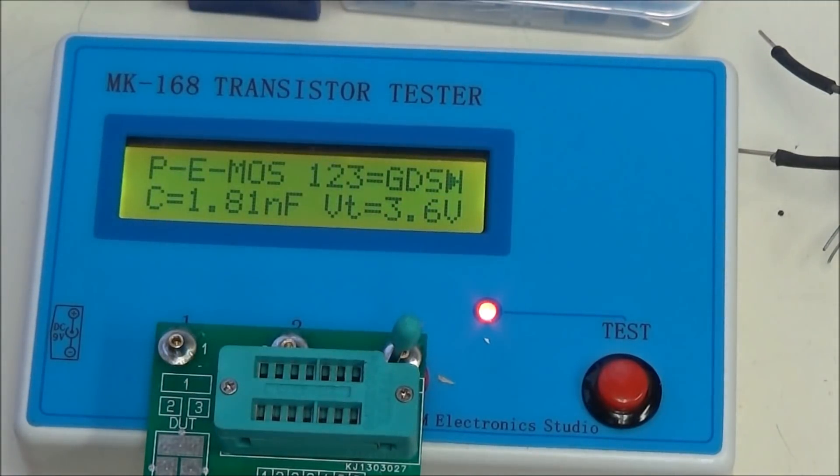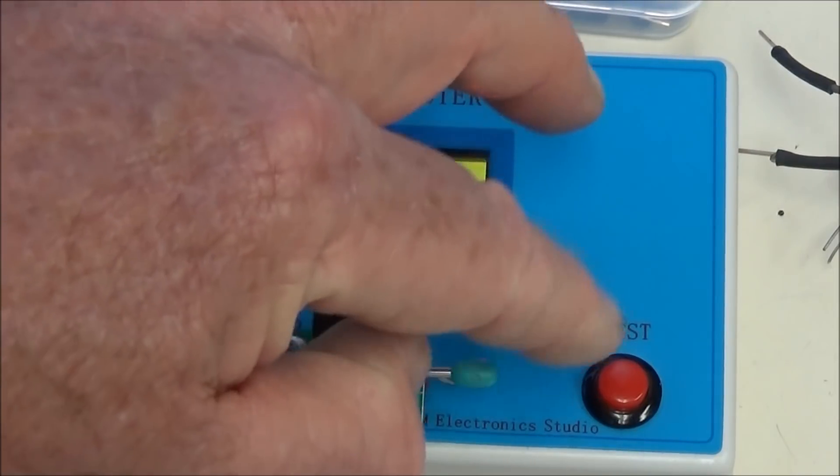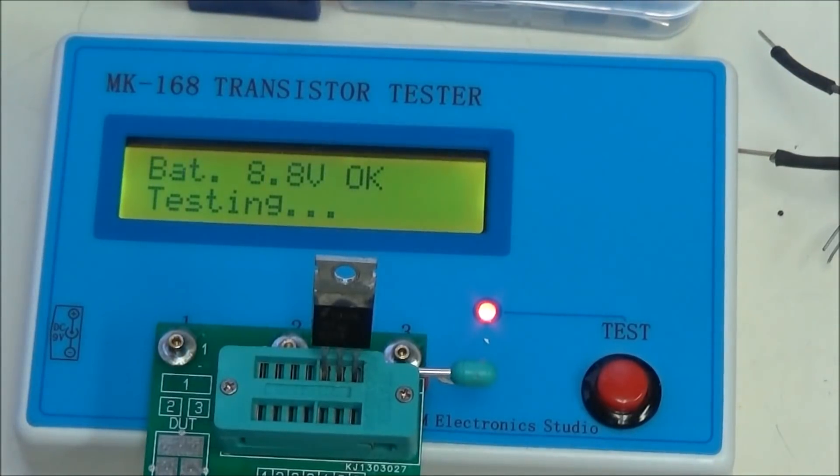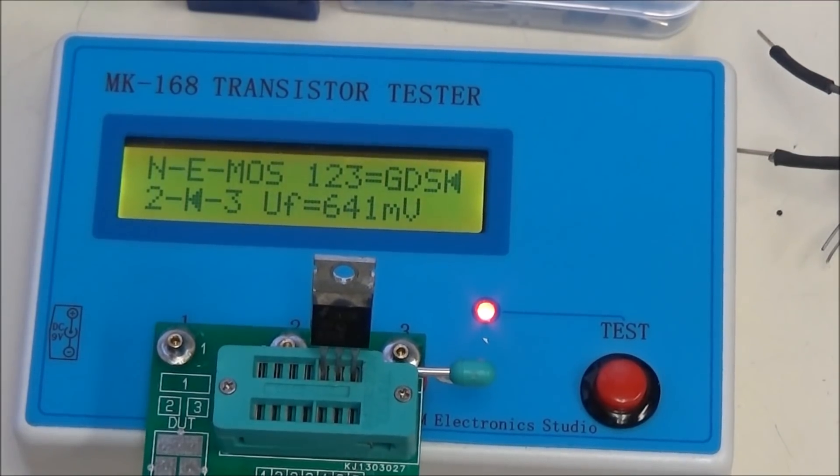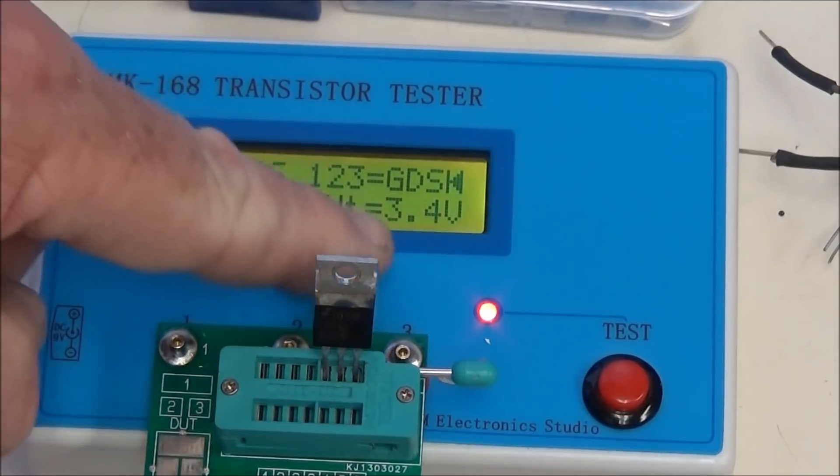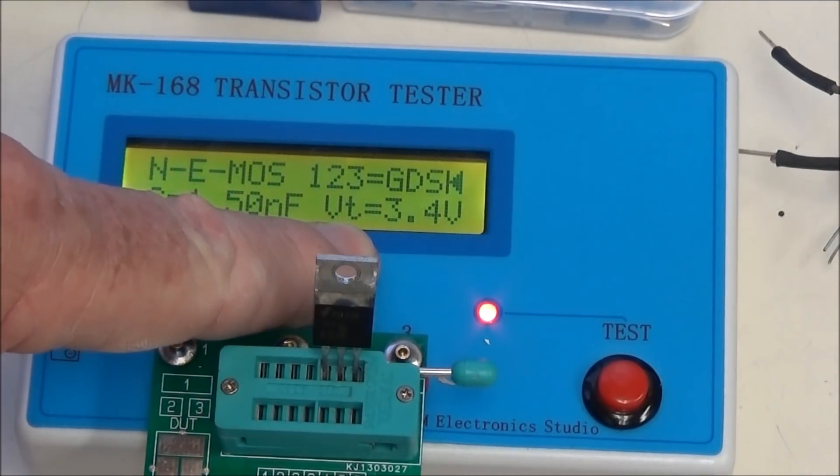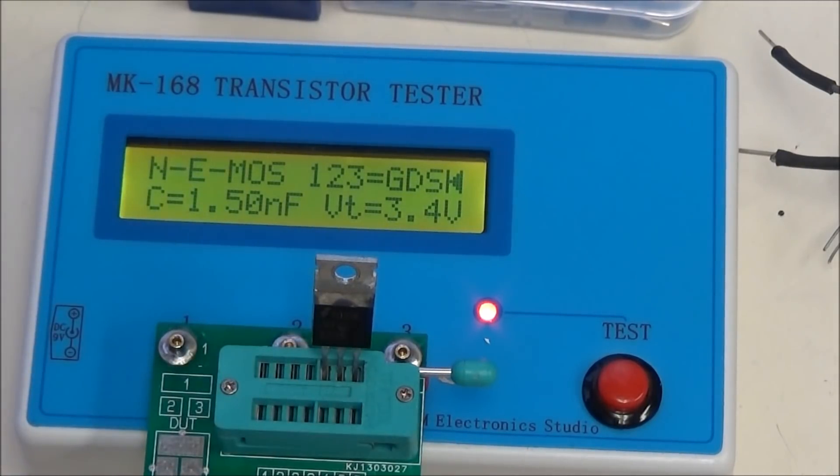Let's try another MOSFET. This one's an N-channel. It's an N-channel MOSFET. It has an internal diode. The turn-on voltage is 3.4 volts. And again, gate, drain, source. That is correct.